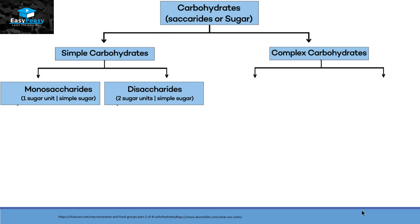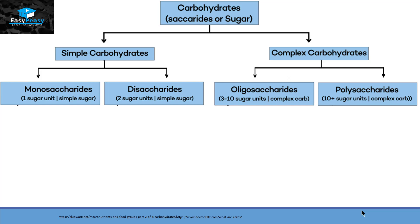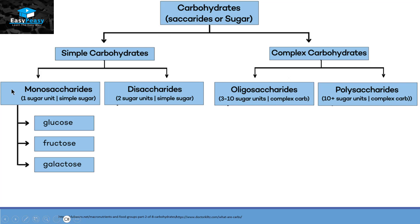Complex carbohydrates can also classify themselves into oligosaccharides and polysaccharides. Now monosaccharides — by the name — tell us that they are the simplest sugars of carbohydrates. Mono means one and saccharide means sugar, so they have one sugar unit in them. For example, glucose, fructose, galactose, etc.